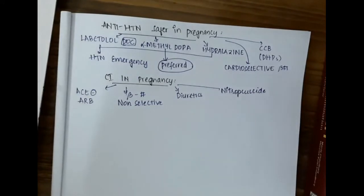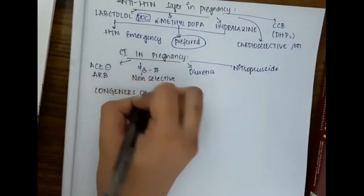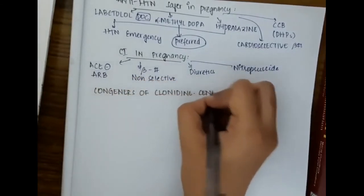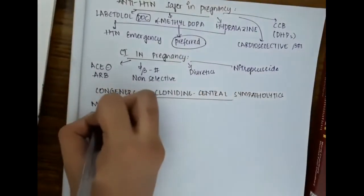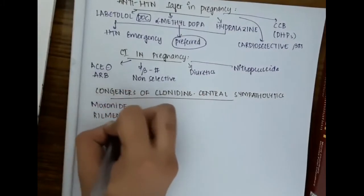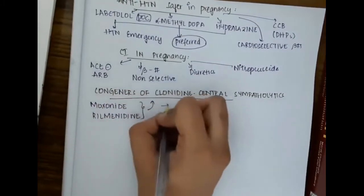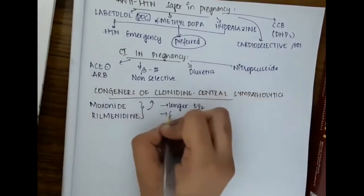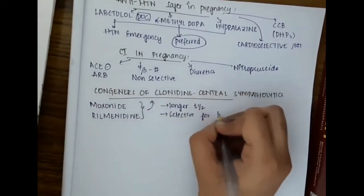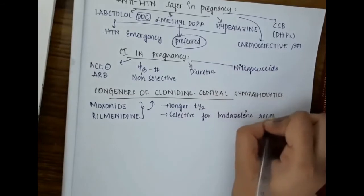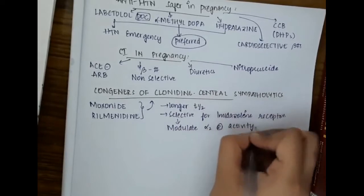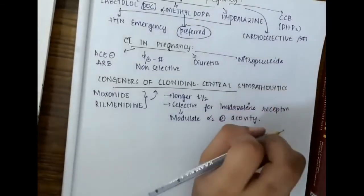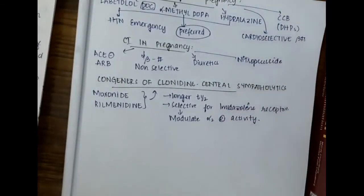Congeners of clonidine, which are also central sympatholytics, include moxonidine and rilmenidine. These have a longer half-life, are selective for imidazoline receptors, and modulate alpha-2 receptor activity.